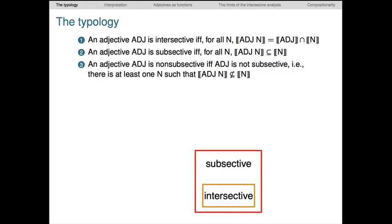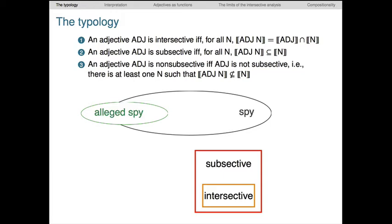An adjective ADJ is non-subsective if and only if we can find at least one N for which the meaning of ADJ N is not contained in the meaning of N. A clear example of a non-subsective adjective is alleged. An alleged spy is not necessarily a spy, but it might be. This is likely to be the largest class of adjectives because the definition is so permissive. First of all, all it takes is one single N for which ADJ N isn't a subset of N semantically. There might be many N's for which ADJ N is inside N. We just find one that isn't, and the ADJ is classified as non-subsective.